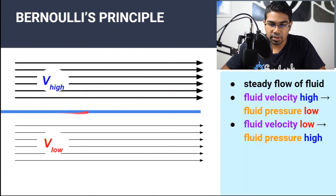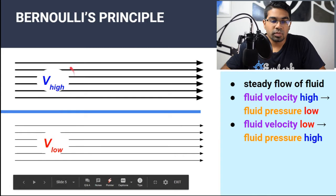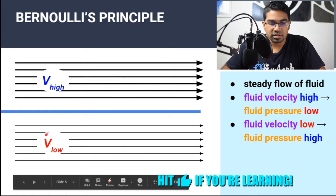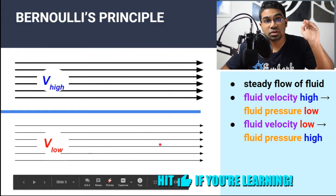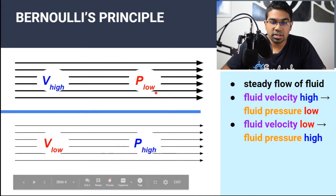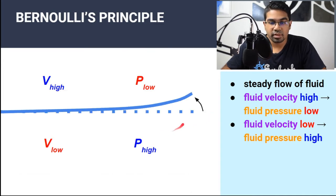Let's say that this blue line is a piece of paper. There is high velocity of air above it, and below there is air flowing at low velocity. Here, high velocity will result in a region of low pressure — so this area above will have low pressure. While below, since the velocity of air is low, the air is moving slowly, and by comparison the pressure in this region will be high. So since we have low pressure above and high pressure below, because of the difference in pressure, there will be a force that pushes the paper upwards. The paper will move upwards.